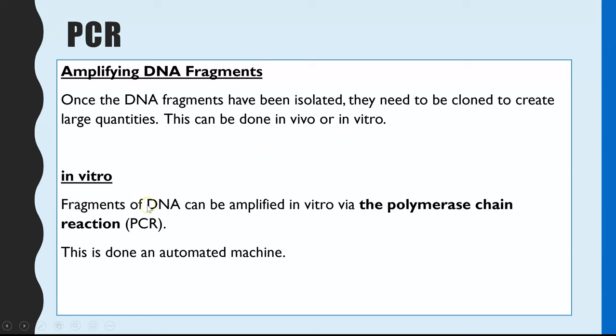So in vitro, that's what we're looking at today. And that is the polymerase chain reaction, PCR. And it is done in an automated machine. So it's fully automatic. You put all of your ingredients into this machine, leave it for a set period of time, and it's all done.